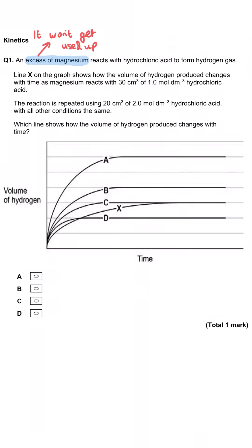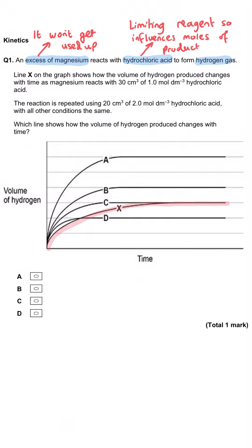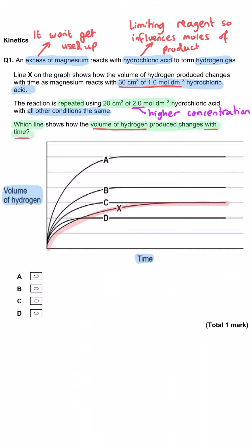An excess of magnesium reacts with hydrochloric acid to form hydrogen gas. Line X on the graph shows how the volume of hydrogen gas produced changes with time as magnesium reacts with 30 cm³ of 1 molar hydrochloric acid. The reaction is repeated using 20 cm³ of 2 molar hydrochloric acid — a higher concentration — and all other conditions are the same. Which line shows how the volume of hydrogen produced changes with time?